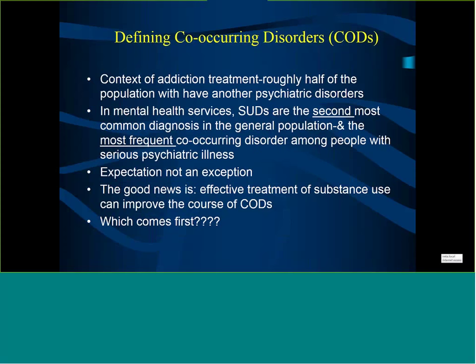Just to define and put it into context: roughly half of the population in addiction treatment will have another psychiatric disorder. Every patient who walks through the door of an addiction treatment program — always remember that 50% of them are going to have some sort of psychiatric disorder. In mental health services, substance use disorders are the second most common diagnosis in the general population and the most frequent co-occurring disorder among people with serious psychiatric illness. The co-occurring disorder is always an expectation, not an exception.